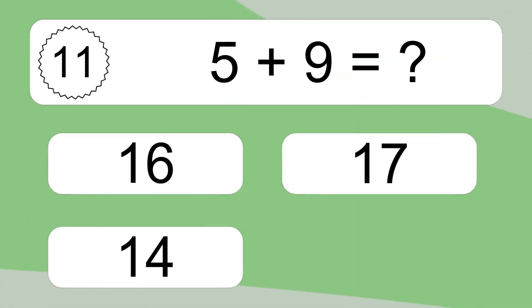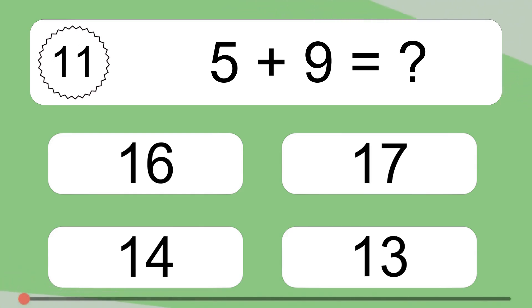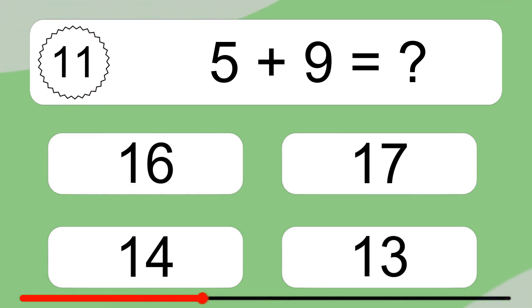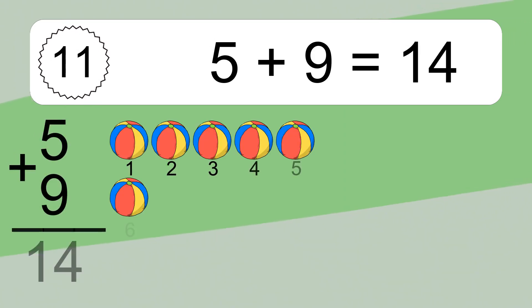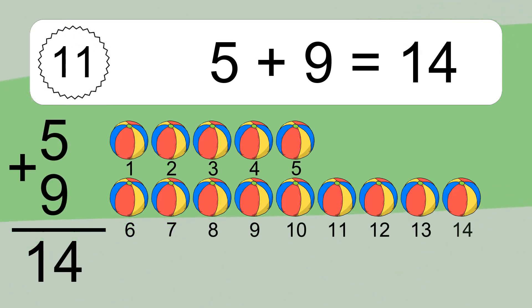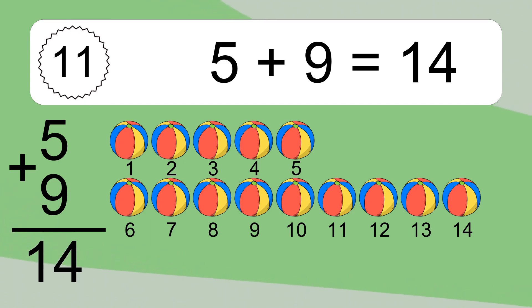5 plus 9 equals what? 5 plus 9 equals 14. Let's count it: 1, 2, 3, 4, 5, 6, 7, 8, 9, 10, 11, 12, 13, 14.